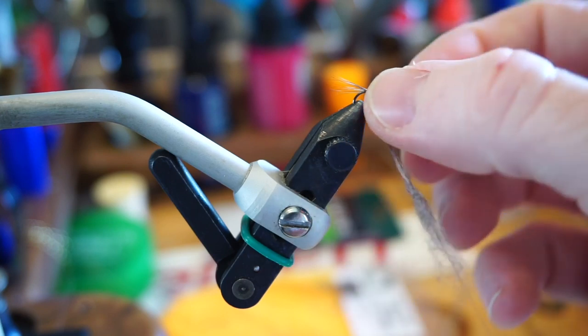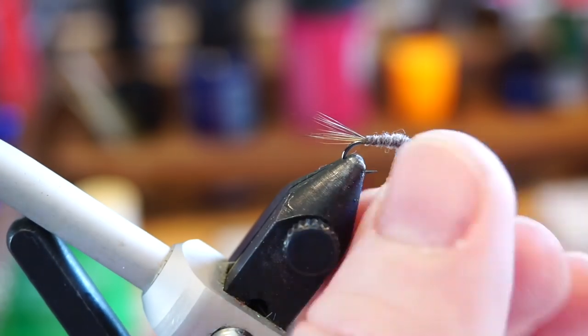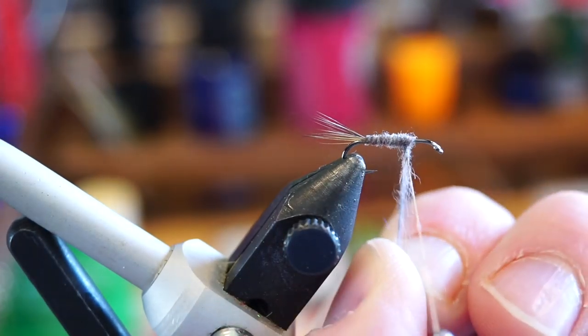Make a fine but tapered noodle onto your thread, and then create a tapered body up to about two-thirds the way up the hook. If you have too much dubbing, you can just pull it off and trim it like so.